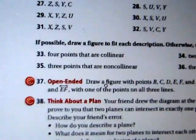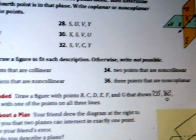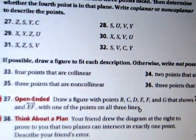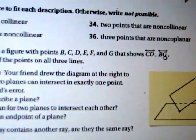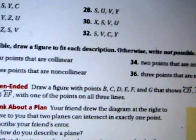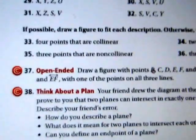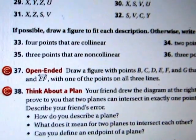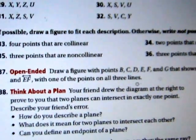Alright, 37. Draw a figure with points B, C, D, E, and F, and G that shows line CD, line BG, and line EF with one of the points on all three lines. Since none of the points are repeated here, all you've really got to do is draw three lines that cross each other. And then make sure that, say, B is the name of the place where they cross. So draw a line CD, then draw a line BG passing it, where B crosses CD, and then draw EF crossing both of them with B also as part of line EF. Not very hard also. I don't think really that important.